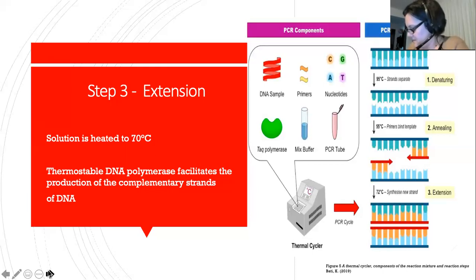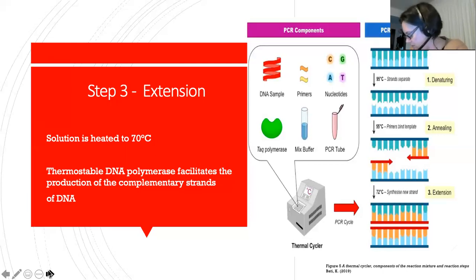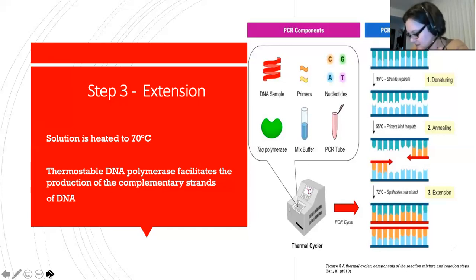From here, the process is repeated in a second cycle. In step one, the two new double-stranded DNA molecules are denatured, creating four single-stranded DNA molecules. At step two, the primers attach to each of the four single-stranded DNA molecules, followed by step three, where with the help of DNA polymerase, four double-stranded DNA molecules are created. On the third cycle, four double-stranded DNA molecules become eight, and then eight become 16. These three steps can be repeated numerous times, each time doubling the amount of DNA present in the solution, quickly creating millions of copies of an initially small sample of DNA.